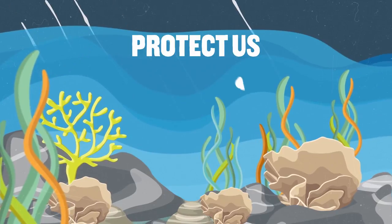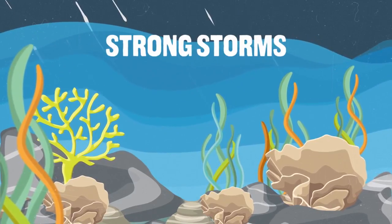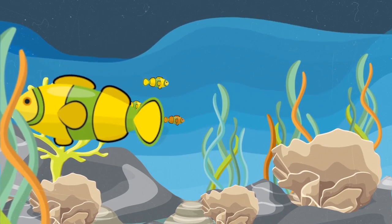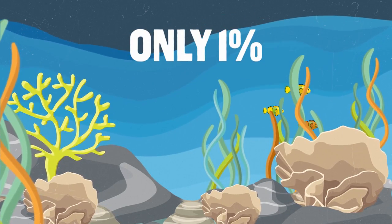Coral reefs protect us on land during strong storms. They also provide homes to more than 25% of ocean life, even though they take up only 1% of the ocean floor.